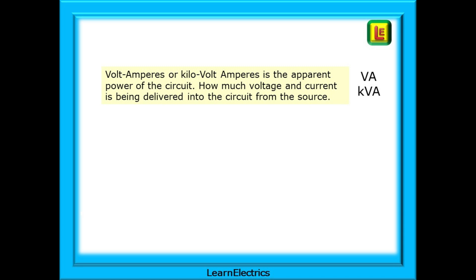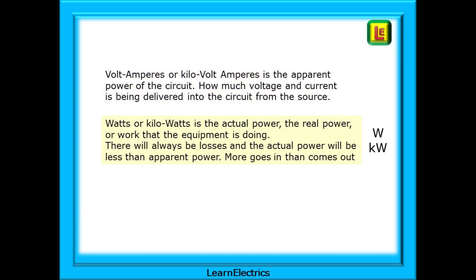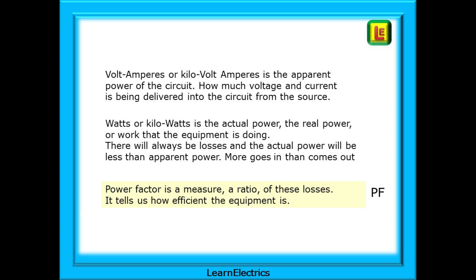Volt amperes or kilovolt amperes is the apparent power of the circuit — how much voltage and current is being delivered into the circuit from the source. Watts or kilowatts is the actual power, the real power or work that the equipment is doing. There will always be losses and the actual power will be less than the apparent power — more goes in than comes out. Power factor is a measure of these losses as a ratio; it tells us how efficient the equipment is. The more efficient the equipment, the higher the power factor. An ideal system will approach but not reach a power factor of 100% or 1. Typically 85–90%, written as 0.85 to 0.9.